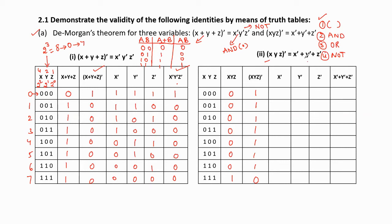Coming to the RHS part, we have x̄ + ȳ + z̄. There is no parenthesis and no AND, so first we perform the complement of each variable. x̄ means complement of x: 1,1,1,1,0,0,0,0. ȳ means complement of y: 1,1,0,0,1,1,0,0. z̄ means complement of z: 1,0,1,0,1,0,1,0.